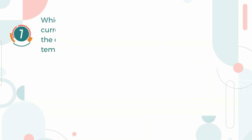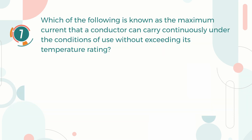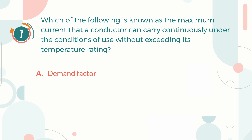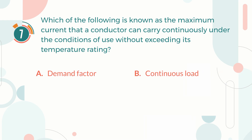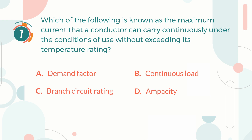Number 7. Which of the following is known as the maximum current that a conductor can carry continuously under the conditions of use without exceeding its temperature rating? A. Demand Factor. B. Continuous Load. C. Branch Circuit Rating. D. Ampacity.